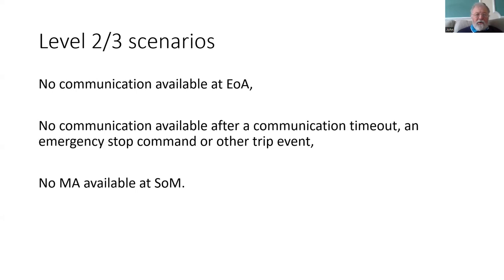In levels two and three, not having any communication when you get to the end of authority means that you can't get past it into the next section. There could be things like a communication timeout, emergency stop, or trip event which has left the train stranded in the middle of an area without communication. Or there could be a fault in the system preventing a movement authority being issued, and that could be at start of mission or during a journey.